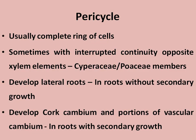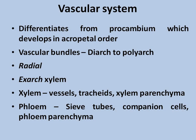The pericycle differentiates quite early in the histogenesis of the roots and its development occurs from the pro-cambium strand. In roots without secondary growth, the pericycle forms lateral roots. In roots with secondary growth, it helps develop the vascular cambium and the cork cambium (phellogen). The pericycle is the layer just below the endodermis, and after it comes the vascular system.